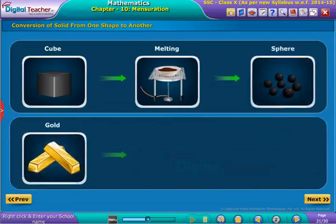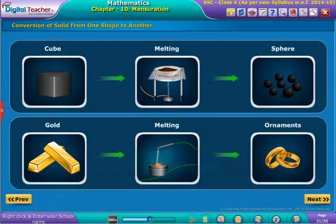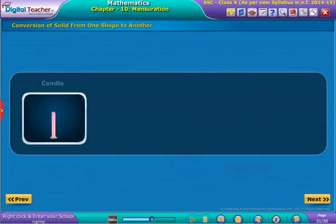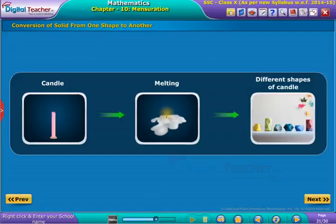When a gold biscuit is melted, we can make different types of ornaments. Similarly, when a cylindrical-shaped candle is melted, it gives wax. When you pour that wax into a container of any specific shape that you want, it transforms into that shape.